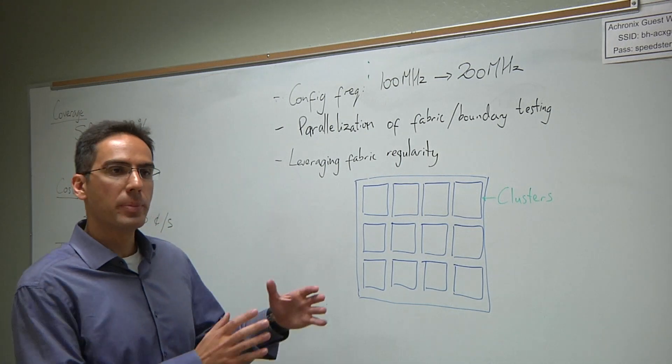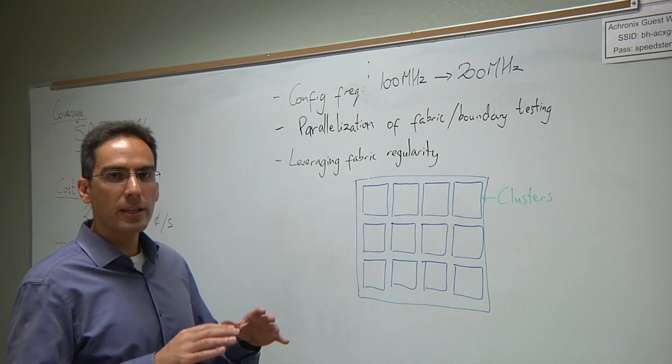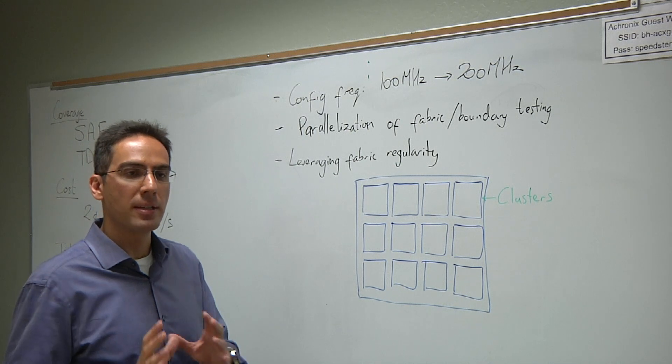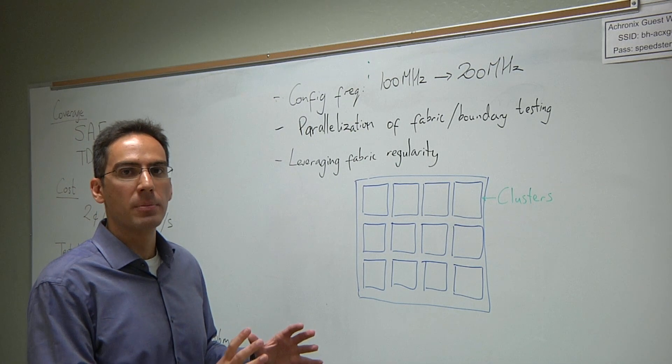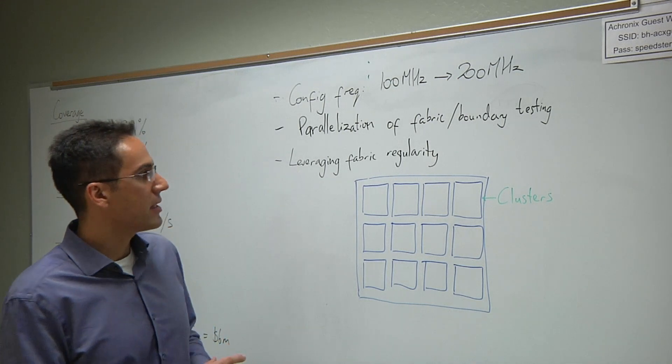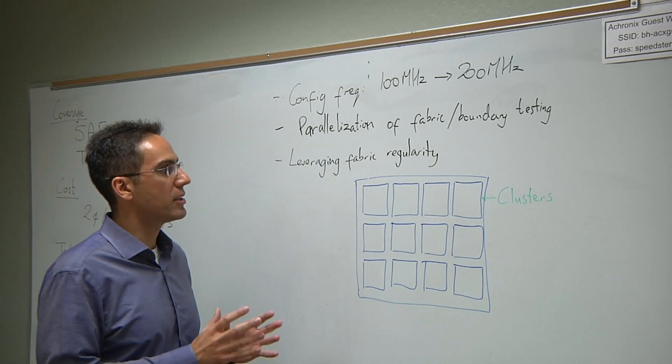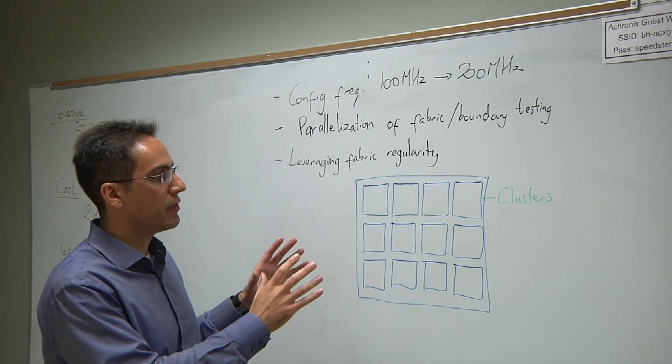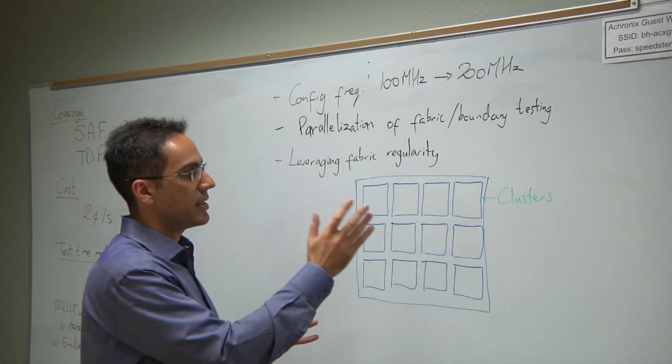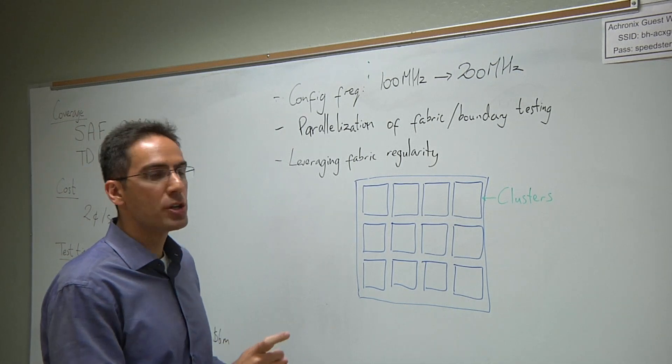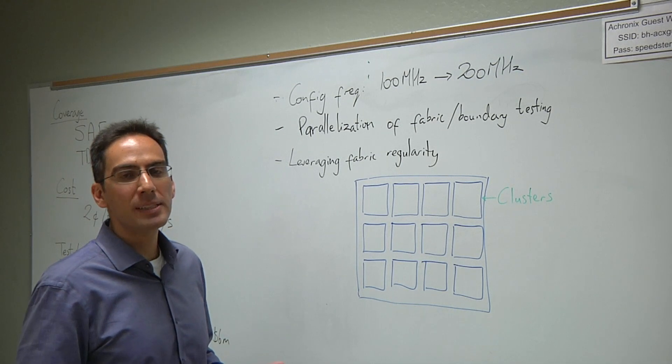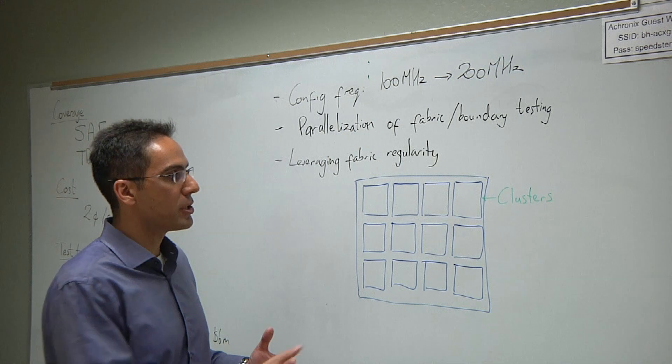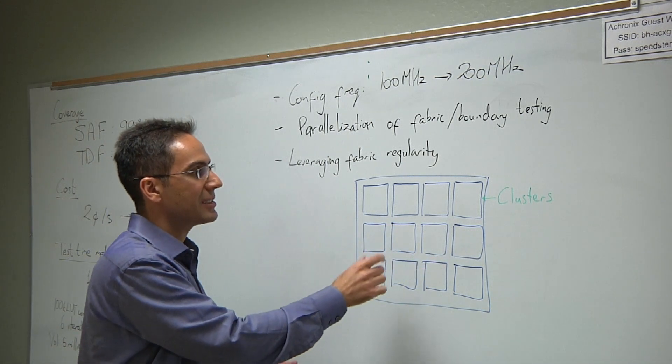The second idea that we have is we talked about serially testing the fabric and then the boundary. We're looking at ways of being able to do that in parallel so that the time taken for the boundary can be essentially integrated into the time taken to test the fabric. And the third idea that we have is leveraging the regularity that we have in the programmable logic fabric. Embedded FPGAs traditionally have very regular structures. In this case, we've shown clusters of programmable logic that have the same resource mix, the same routing, and the same tiles. So the idea behind this is we leverage the regularity here to be able to test these clusters in parallel.